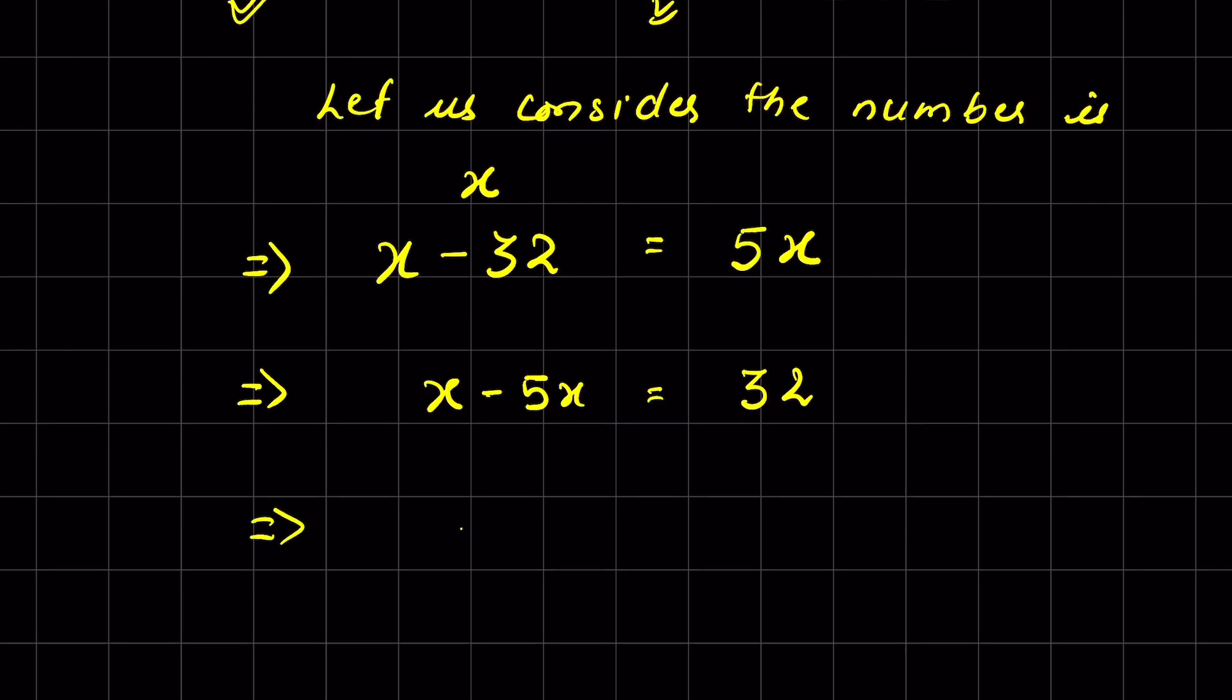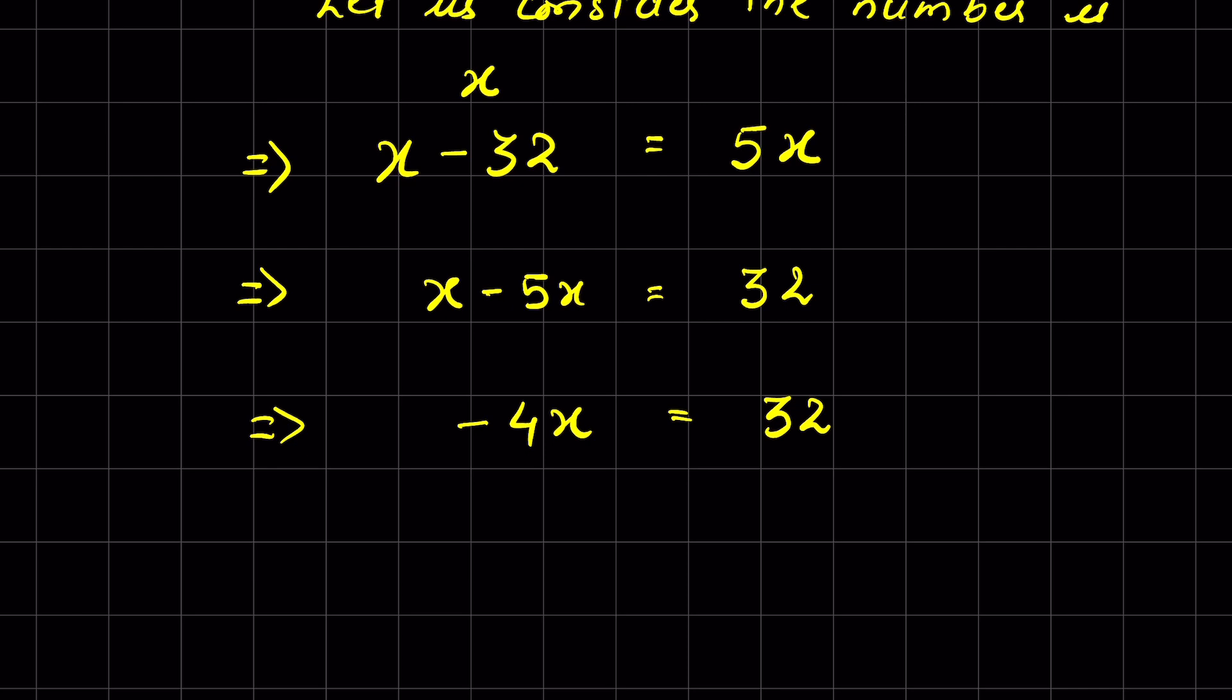Now x minus 5x will be negative 4x, which equals 32. Now divide both sides by 4. 4 times 1 is 4, 4 times 8 is 32.